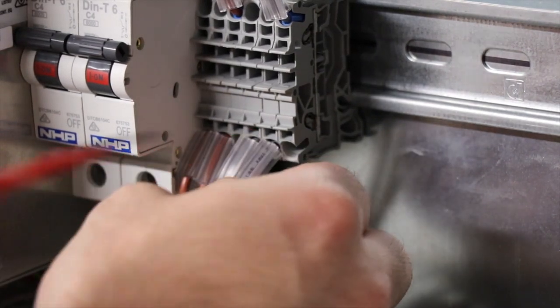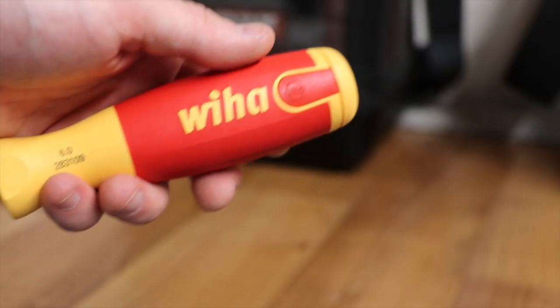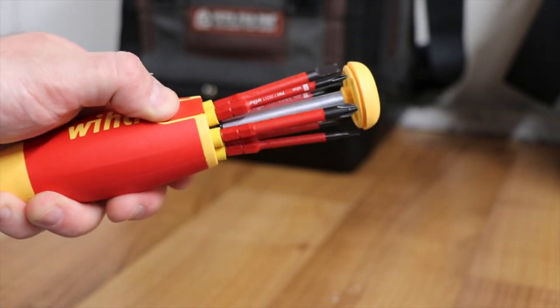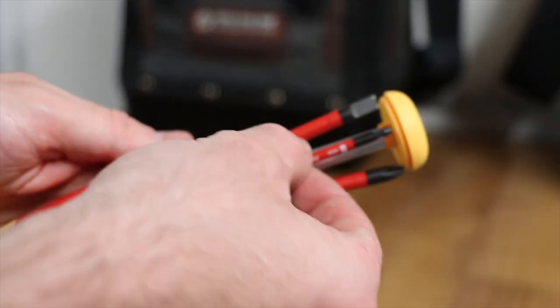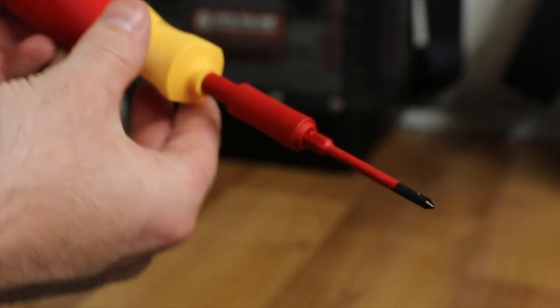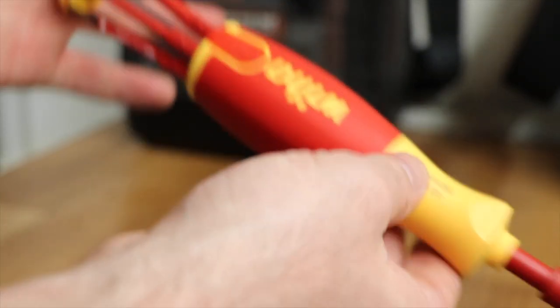All the tips are robust, just like normal WIHA screwdrivers. Setting up the tip is quick and easy—squeeze the end of the handle and the magazine pops out. You take one bit out, fit it on the socket, and close the magazine. Once it's in the quick-fix holder, it stays in place, and I've never had a bit fall out yet.